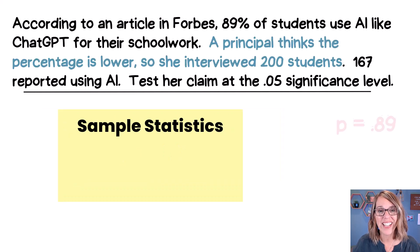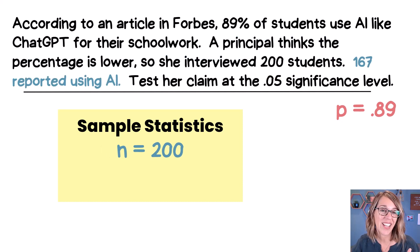Now if we go on into the next sentence, we're talking about her sample. So we had 200 students that she sampled. This is our N, our sample size, 200. Out of those 200, 167 reported using an AI, so that gives us our X. You can think of those as your favorable outcomes, 167.